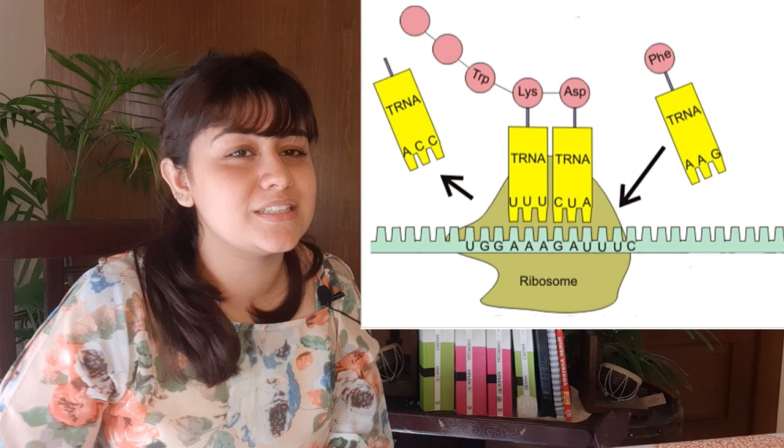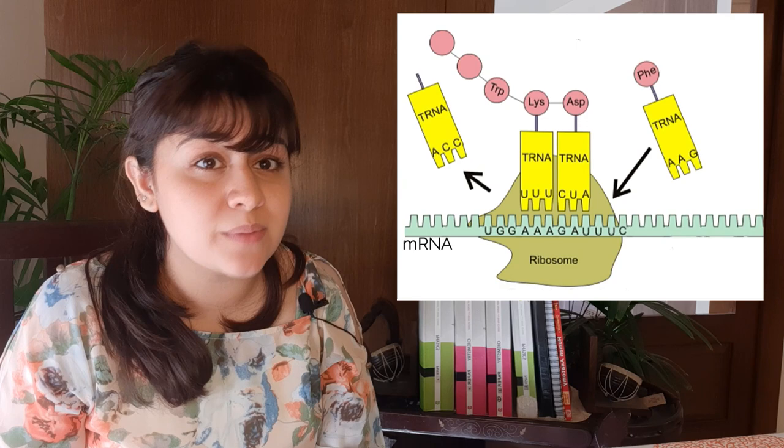Each tRNA has three bases at the bottom and depending on those, a specific amino acid is attached to it on the top. There are a lot of different types of amino acids, and there is a specific structure and order in the chain which determines what kind of protein will be made. The tRNA molecule is going to align itself with the mRNA at the right place in the ribosome, and this will determine where that amino acid is going to appear on the protein chain.